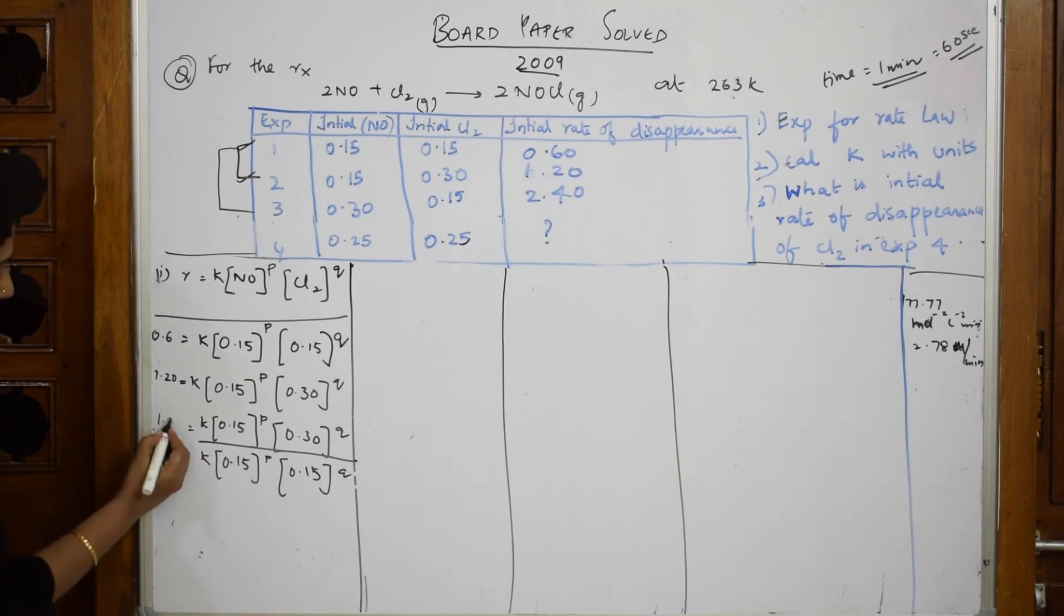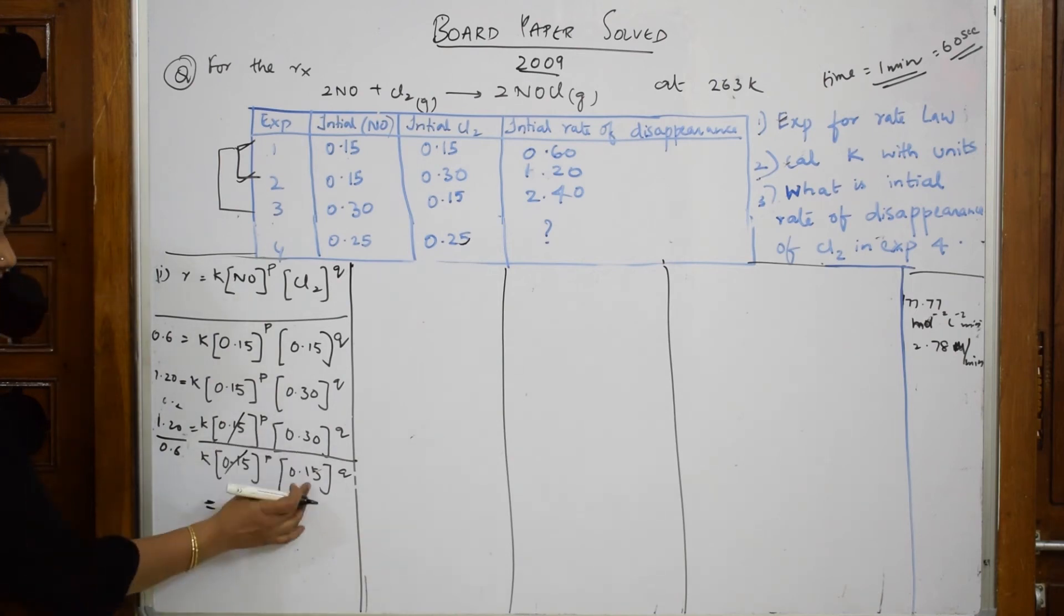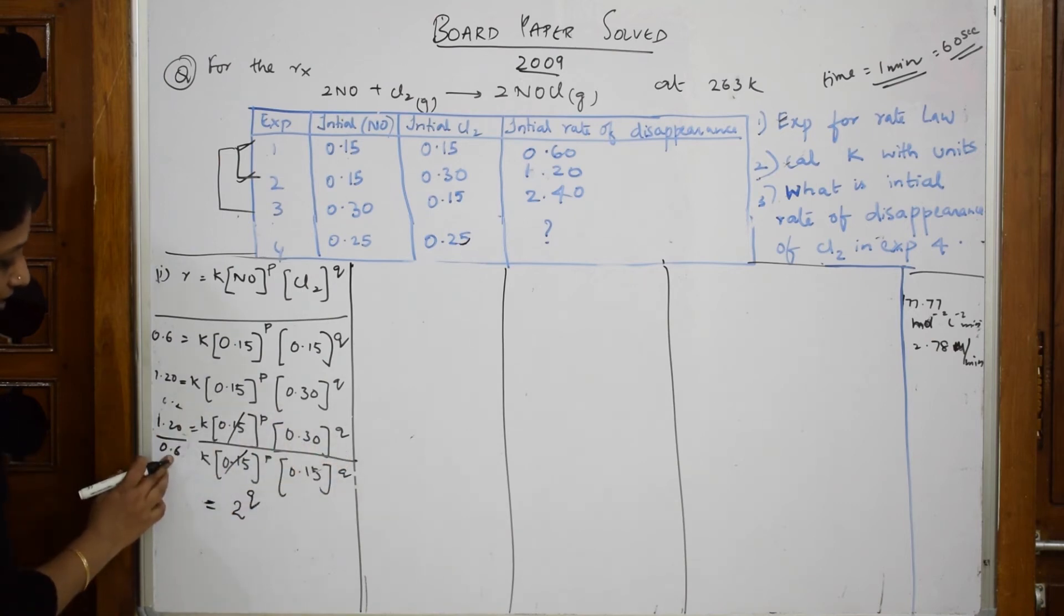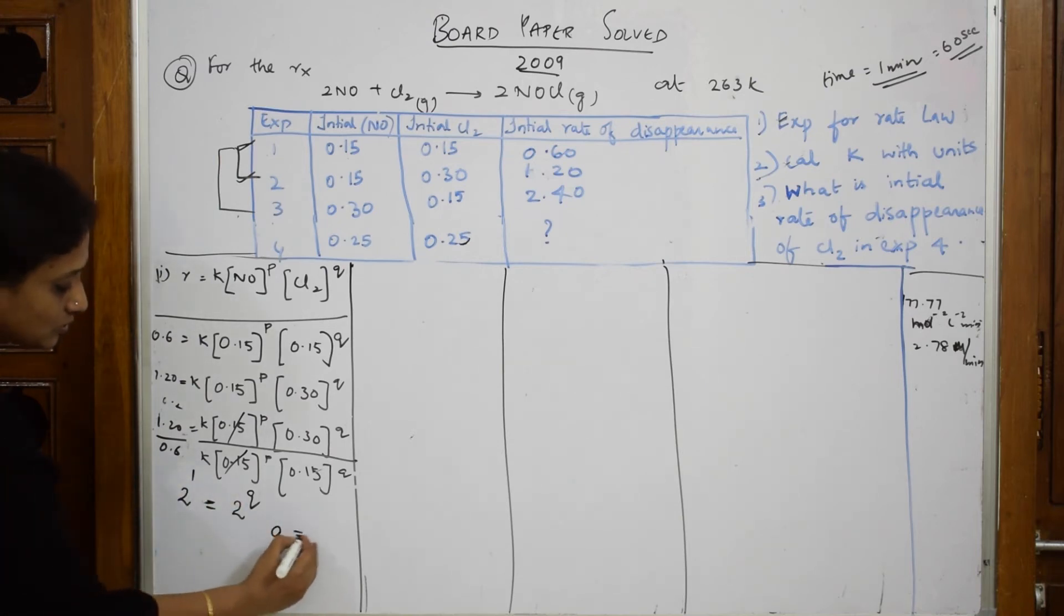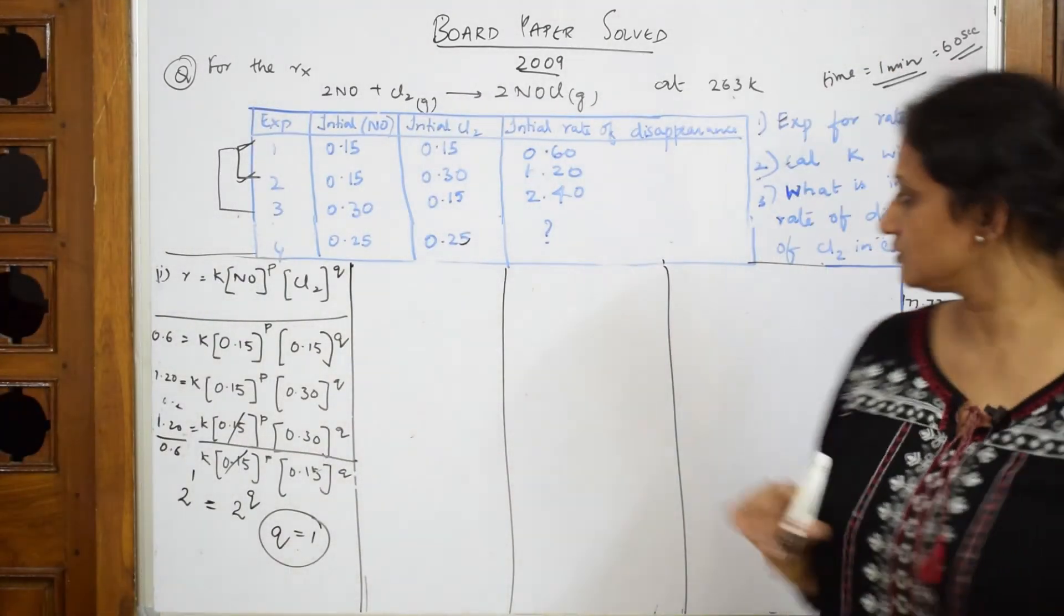This is R1, this is R2. R2 by R1 is equal to K times 0.15^P times 0.30^Q divided by K times 0.15^P and 0.15^Q. This value is 1.20 by 0.6. What do I get? This gets cancelled out. I can write as 2 raised to the power of Q. What do I get here? I get twice, 2 raised to the power of 1. Q and the bases are same, so Q is equal to 1. I've got one answer. Let me come back and solve the P part.